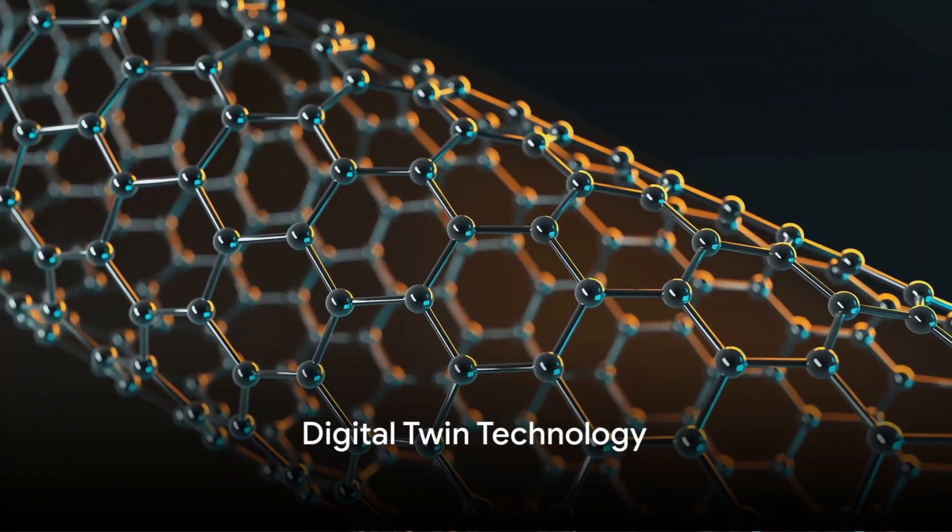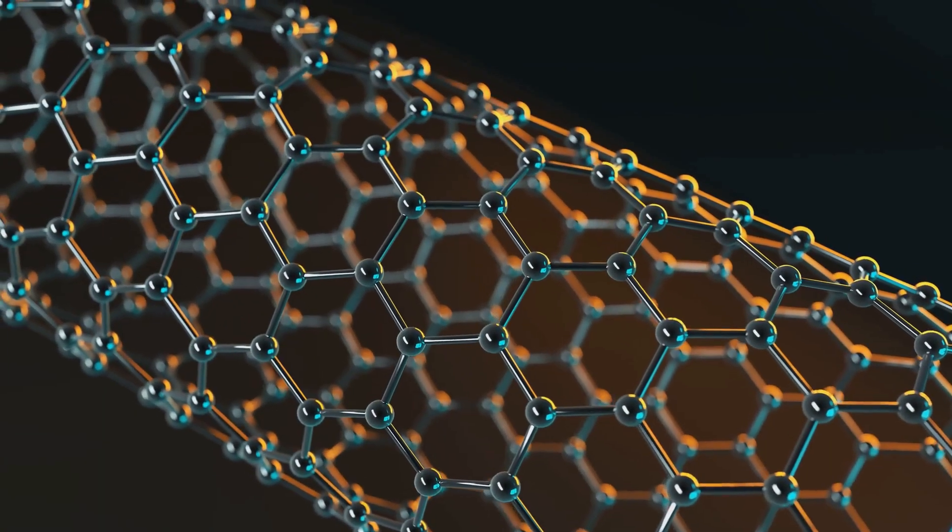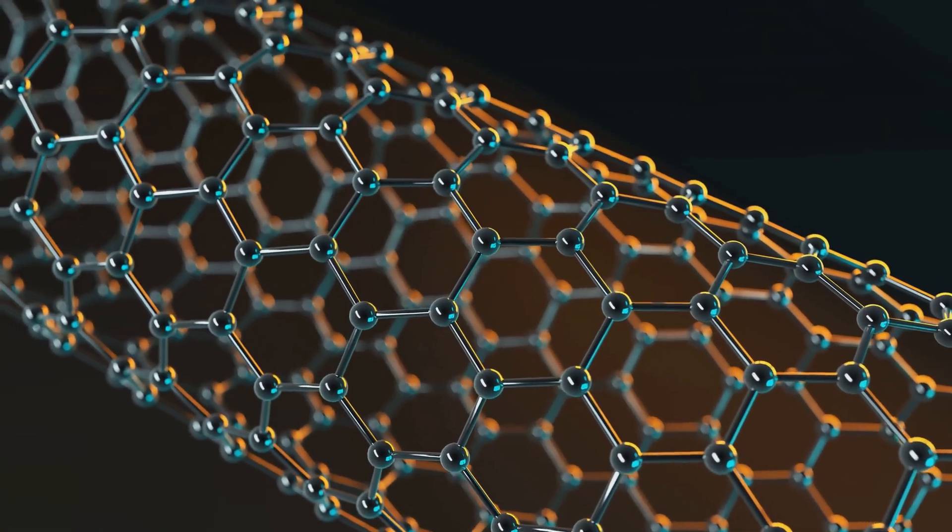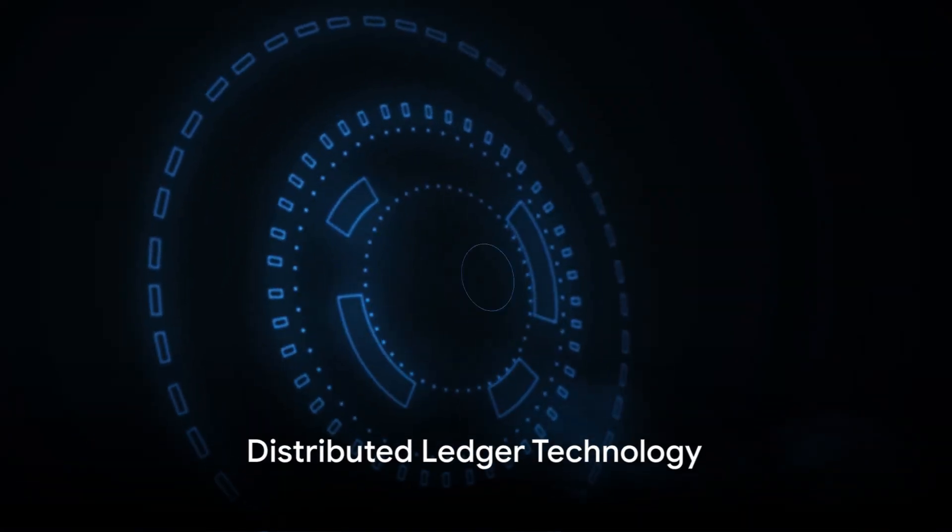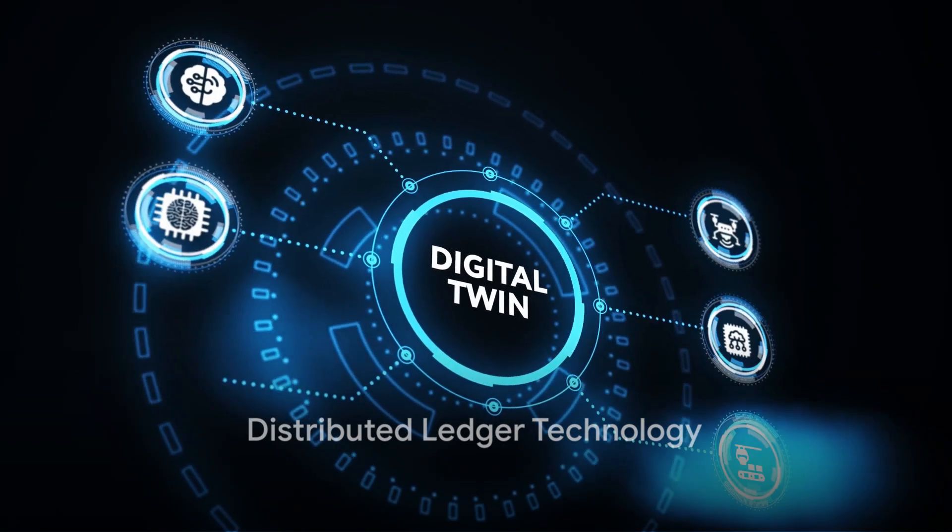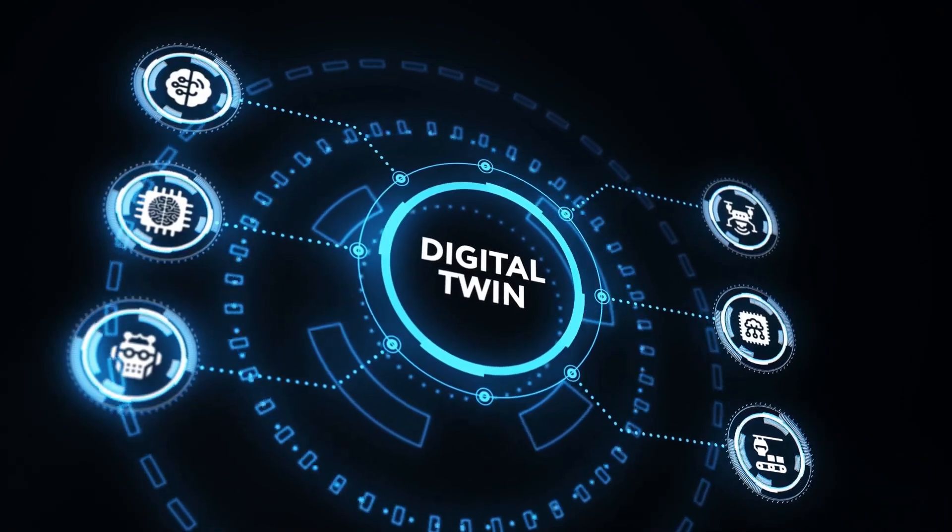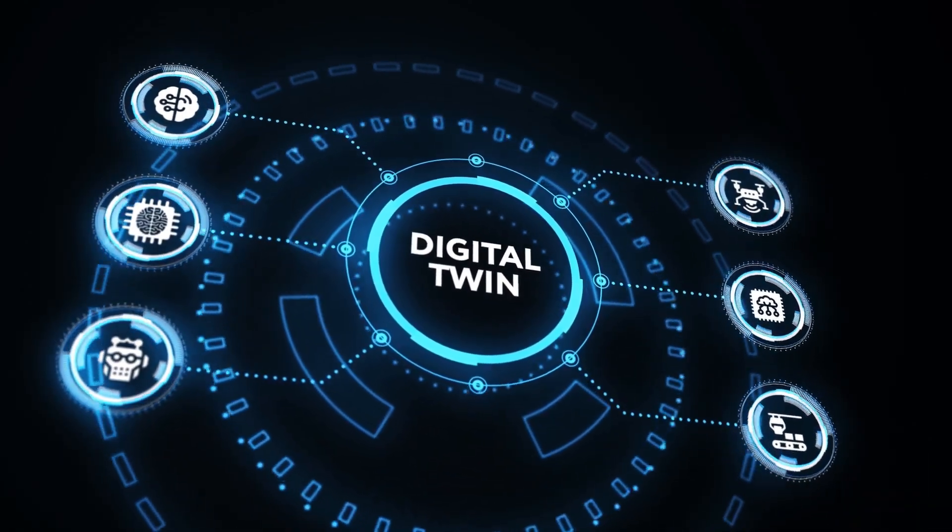Eighteenth on the list is Nanotechnology. This manipulates matter on an atomic level, promising breakthroughs in fields from medicine to energy production. Nineteenth, we look at the Digital Twin Technology. It creates a digital replica of a physical entity, allowing for simulation and analysis.